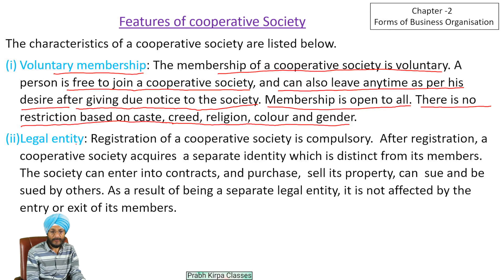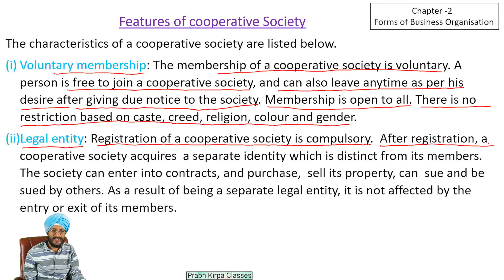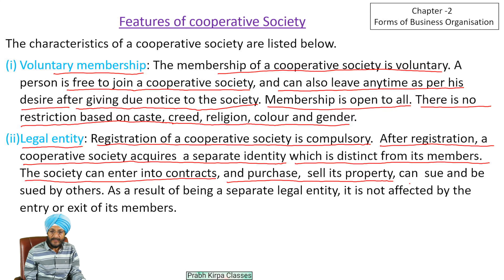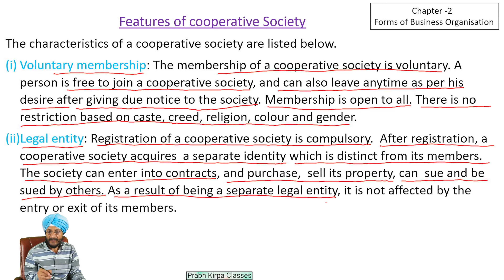The next feature of cooperative society is legal entity. Registration of a cooperative society is compulsory in India. After registration, a cooperative society acquires a separate identity which is distinct from its members. The society can enter into contracts, purchase and sell property in its name, and can sue and be sued by others. As a result of being a separate legal entity, it is not affected by the entry or exit of its members.